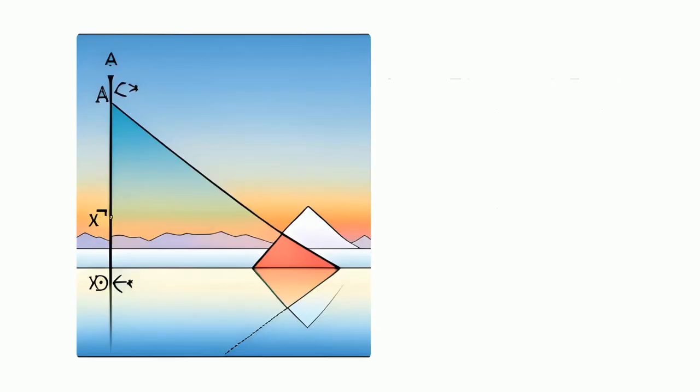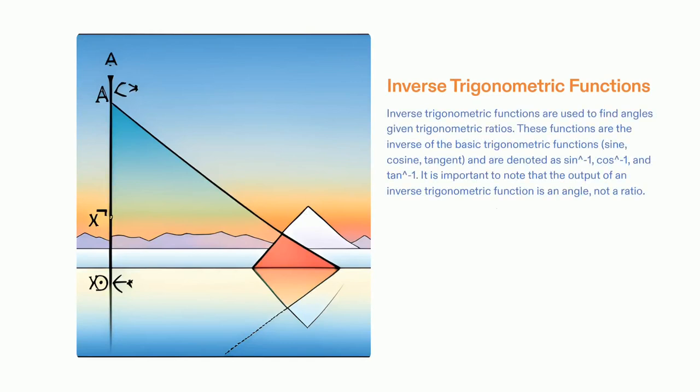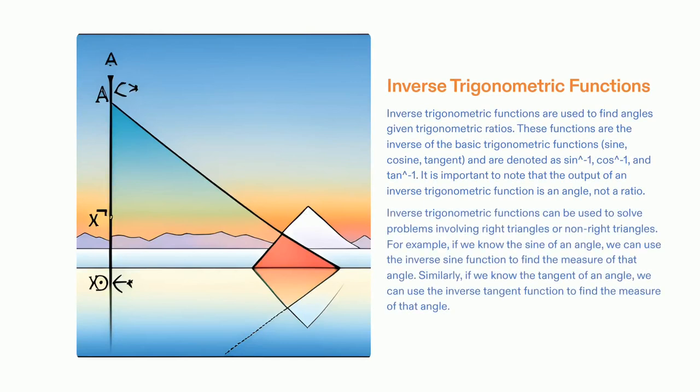Inverse trigonometric functions enable us to work out the angles in a triangle when we only know the ratios between the sides. These functions are the reverse of the basic trigonometric functions, such as sine, cosine, and tangent.